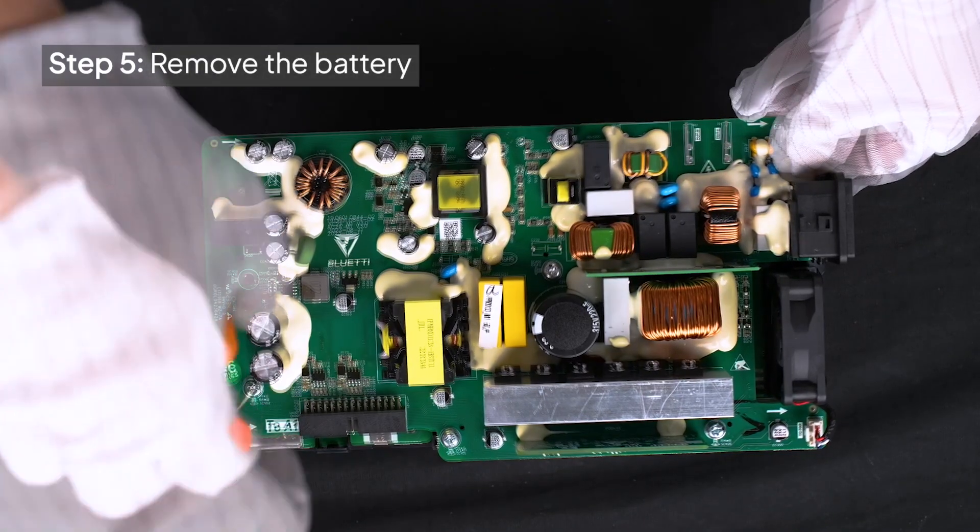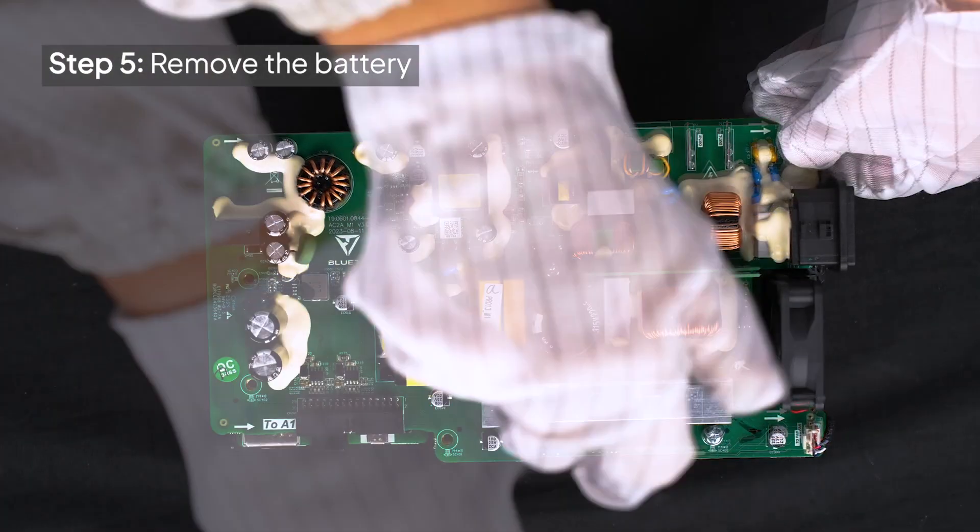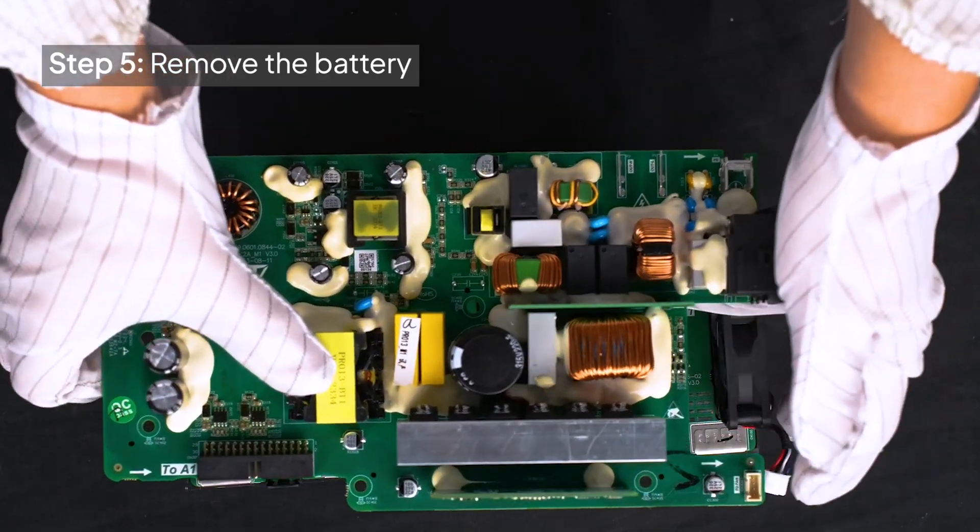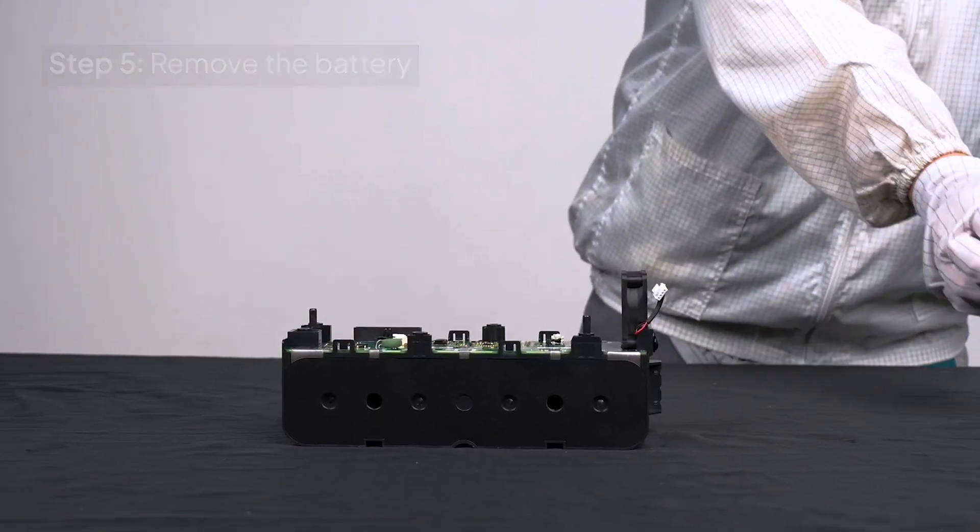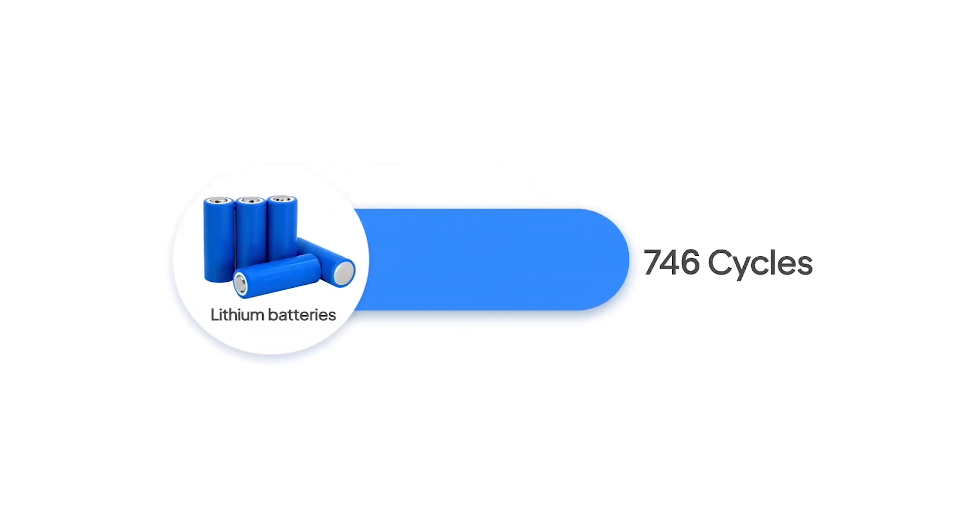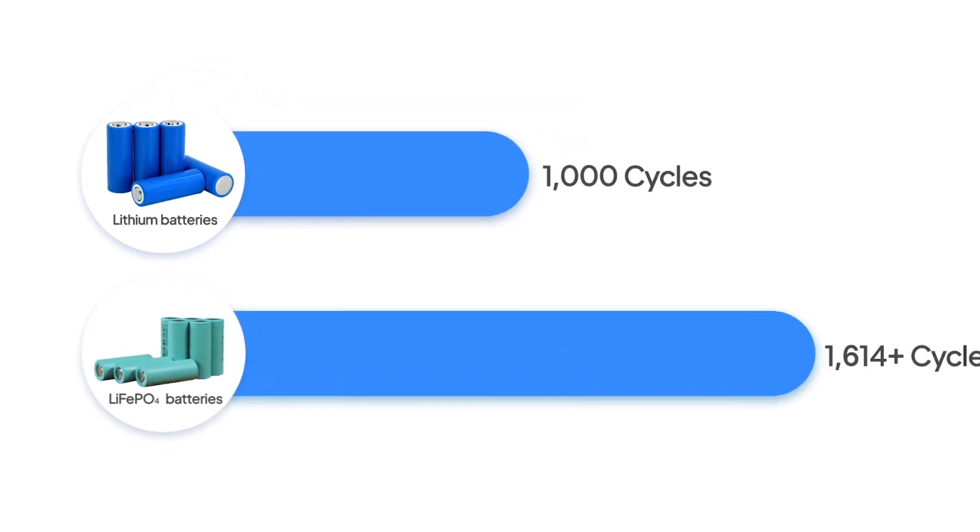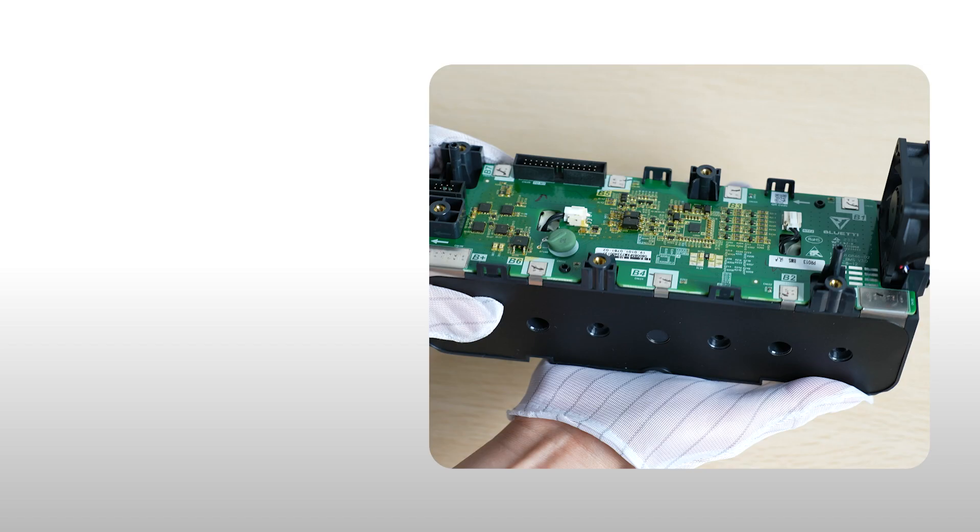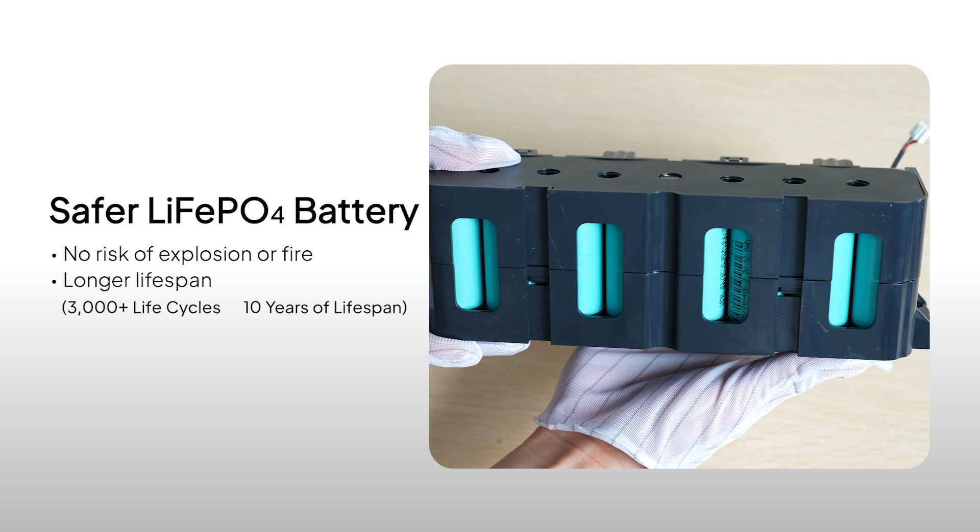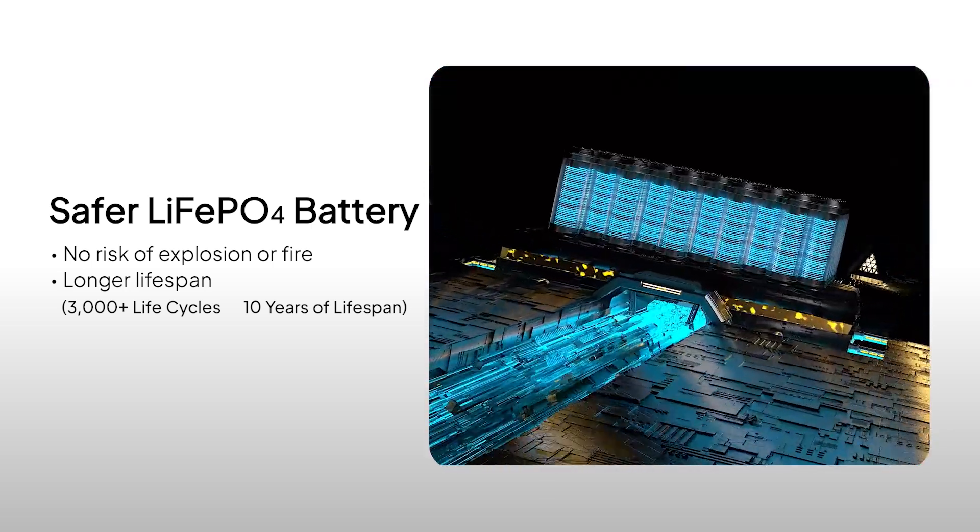Now, remove the battery. Unlike ternary lithium batteries, which last only around 1,000 cycles, the lithium iron phosphate cells used in Bluetti products are safer, more stable, and last up to 3,000 cycles within about a 10-year lifespan.